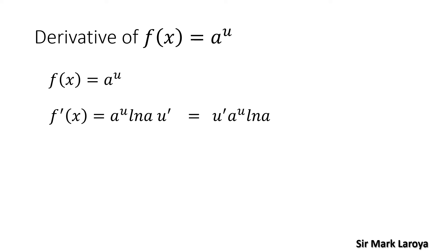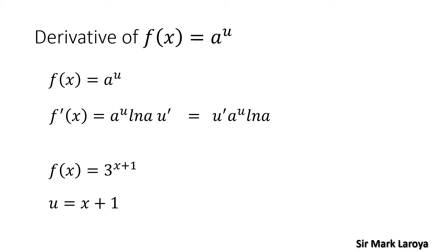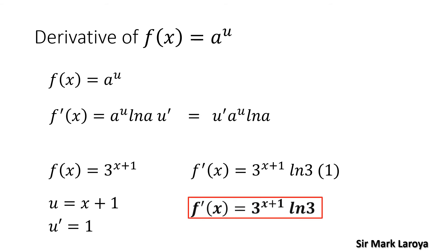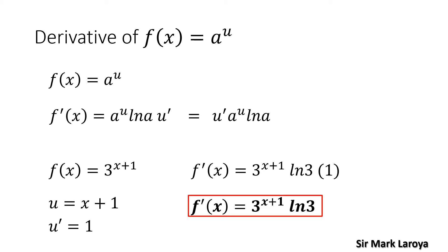Another example for this exponential function: f(x) = 3 raised to (x + 1). Our a here is 3, and our u the exponent is (x + 1). So u prime will be simply 1. Applying the formula, f'(x) = 3 raised to (x + 1) times ln(3) times 1, or simply f'(x) = 3 raised to (x + 1) times ln(3).